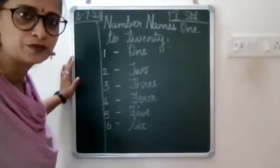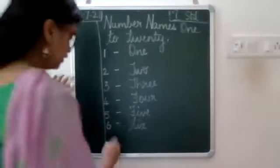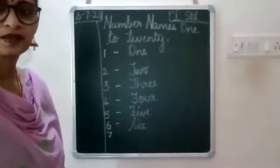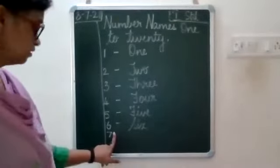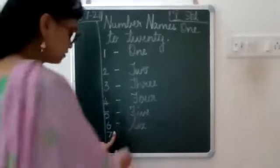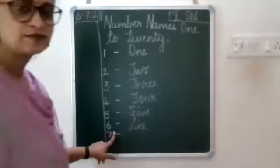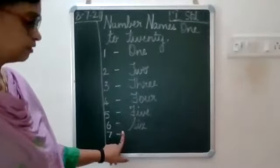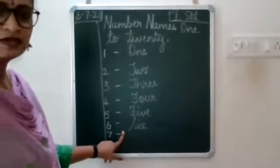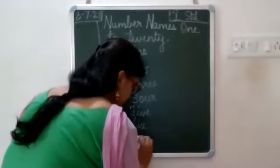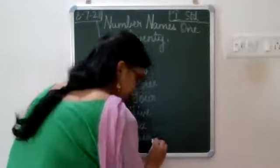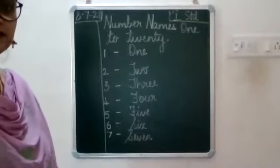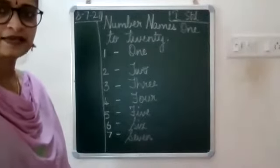Very good Charvi, very good Anju. Now again leave a line, write SEVEN. Leave one finger space, put a small dash, leave one finger space, then write capital S-E-V-E-N, seven.